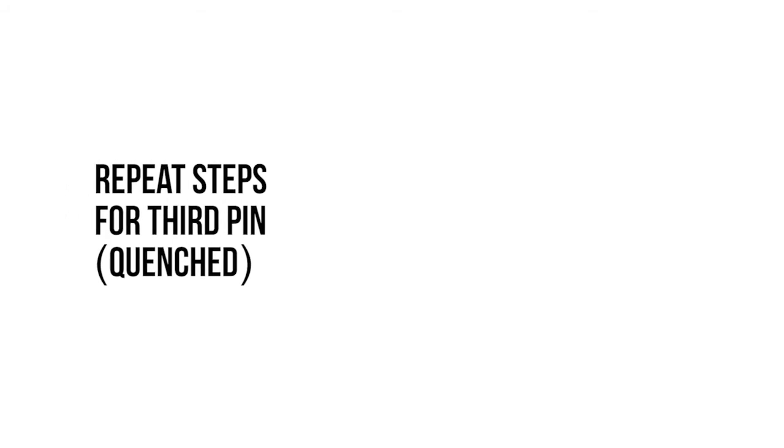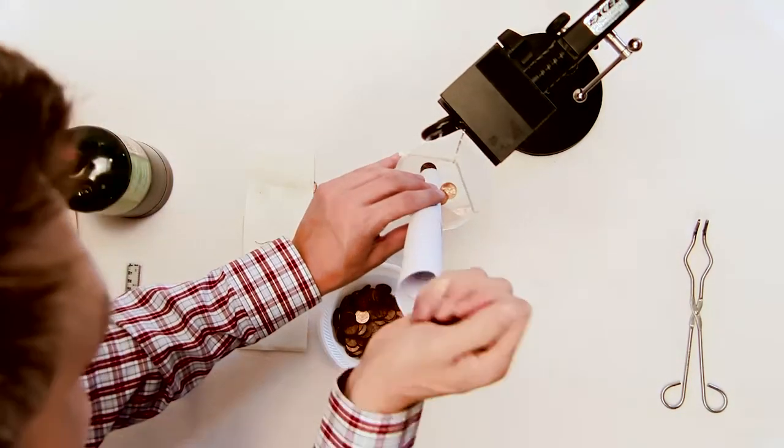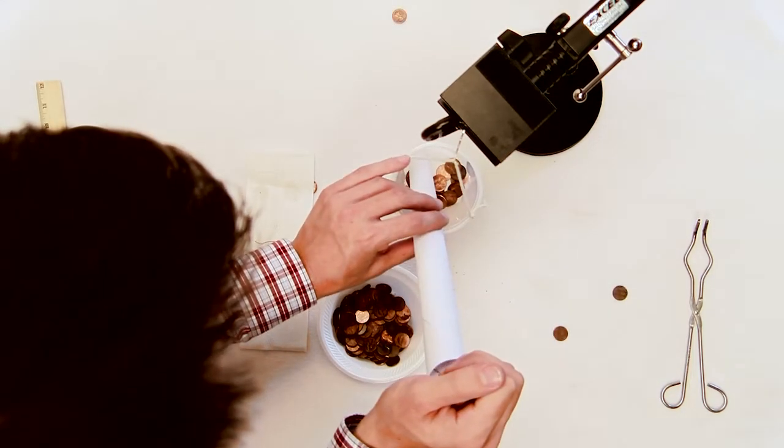Repeat the process using the quenched bobby pin. Set up the quenched bobby pin as before. Load the pennies into the cup being held by the quenched bobby pin in the same fashion as the control and annealed bobby pins.